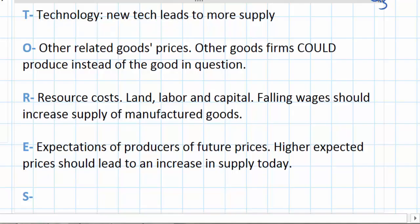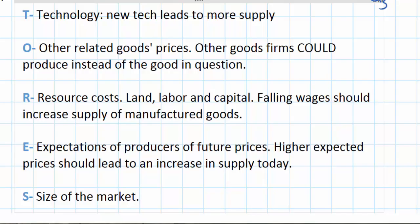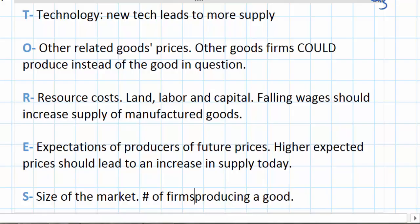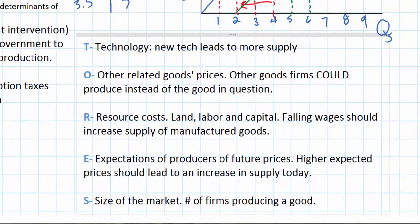The final non-price determinant of supply is the size of the market — referring to the number of firms producing a particular good or service. An increase in the number of firms producing a good should cause the supply of that good to increase, whereas a decrease in the number of firms should cause the supply to decrease.